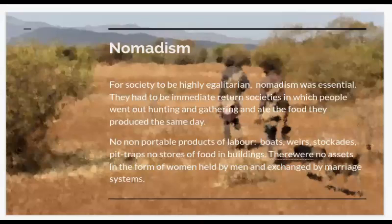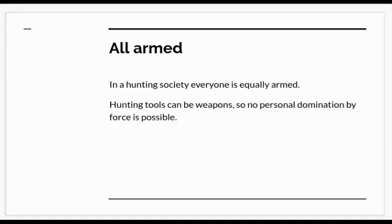There are also no non-portable products of labour — no boats, weirs, stockades, pit traps, no stores of food in buildings. Once you have those embedded resources, which have been built by labour to be used later, those resources can be monopolised. There are also no assets in the form of women held by men and exchanged by marriage systems. Another point about a hunting society is that everyone is armed. Tools developed for hunting can also be used as weapons against humans — bows and arrows, spears, etc. If the population is all equally armed, it's impossible to establish any system of personal domination.